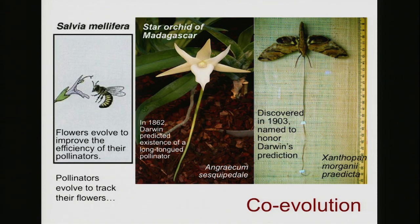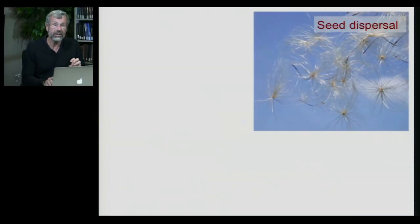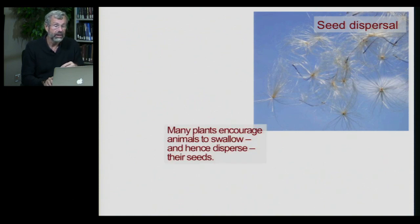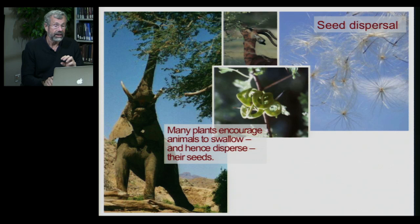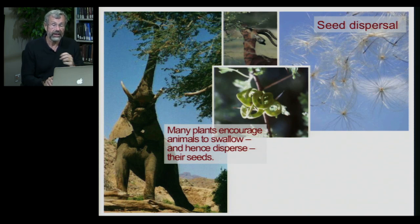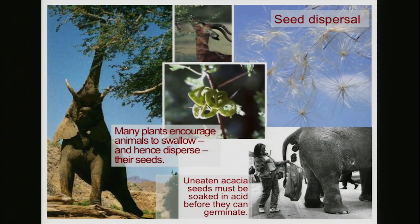The point of this is that pollinators do indeed evolve to track their flowers — there is coevolution between the two interacting species. Now, seed dispersal sometimes happens on its own: seeds get blown in the wind, as happens with dandelions, which we see every spring and summer. But a lot of plants encourage animals to swallow and hence disperse their seeds. In Africa, acacias produce seed pods that are quite appealing, and animals like elephants and impala eat the pods but don't crush the seeds, so the seeds come out the other end. Uneaten acacia seeds will not germinate unless you soak them in acid — they need to pass through a digestive system to know they're ready to grow.